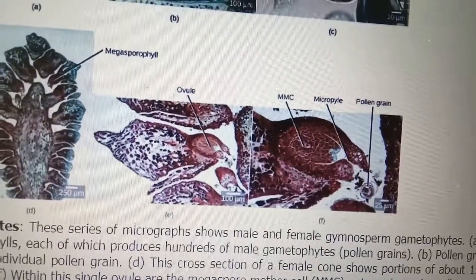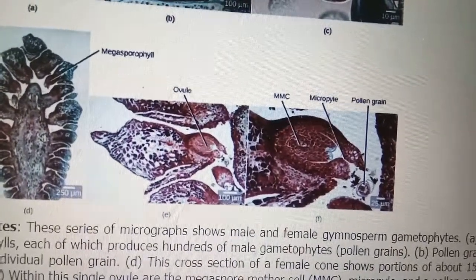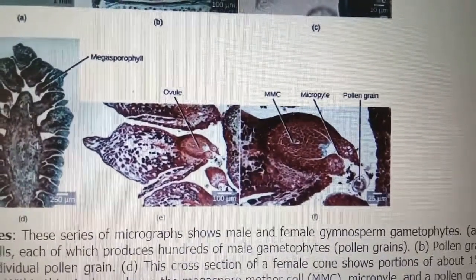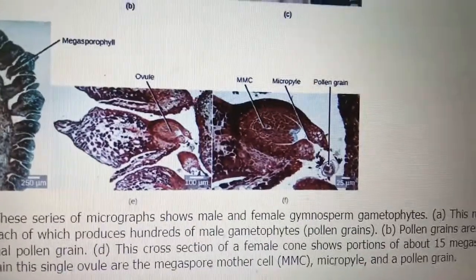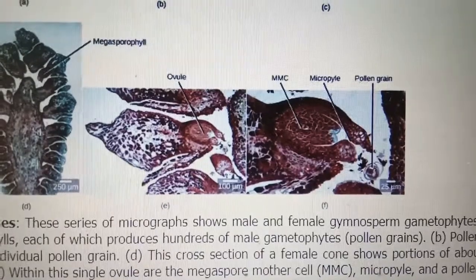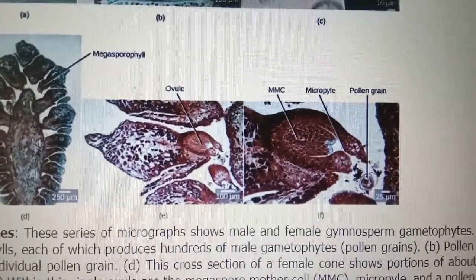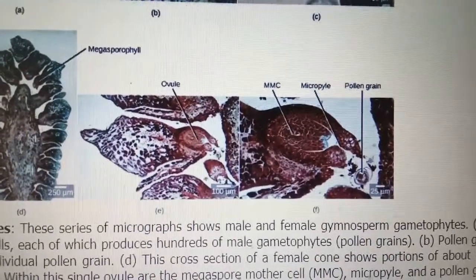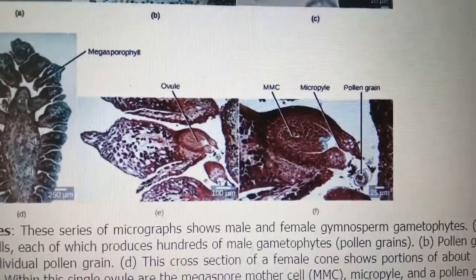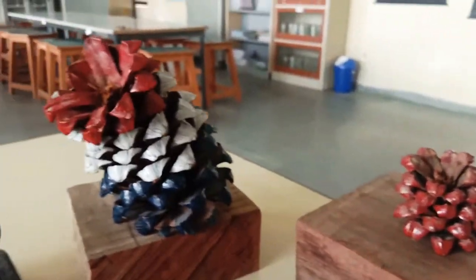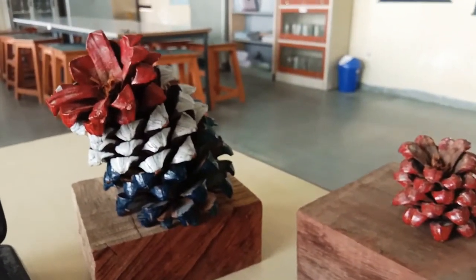In the individual megasporophyll, there is an ovule at the base. Out of four megaspores, only one is functional. This functional megaspore is formed from the megaspore mother cell. At the micropyle, the pollen grain enters and germinates to form a pollen tube carrying two gametes, which fuse with the egg — this is called syngamy or fertilization — and ultimately seed formation occurs.